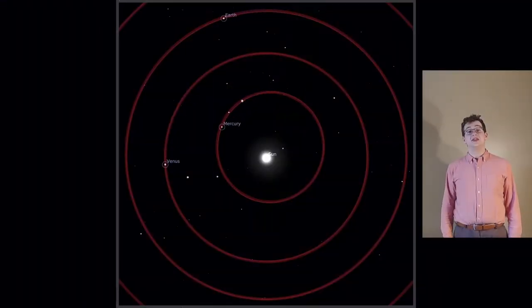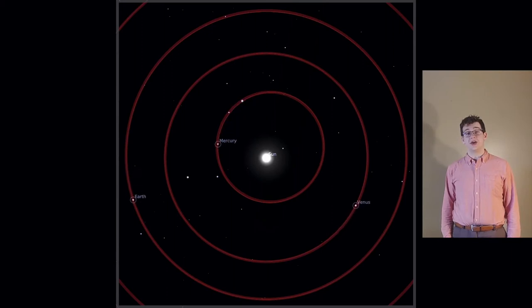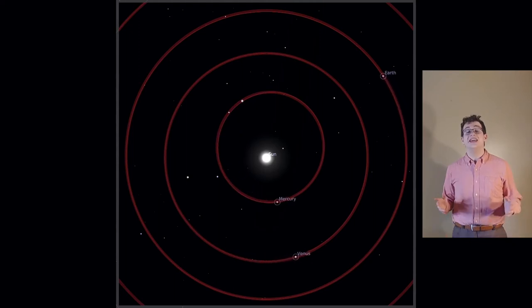Because Venus is closer to the Sun, it has a shorter year than the Earth. One year on Venus is about 225 Earth days long. However, it rotates very slowly, and unlike most other planets, rotates in a clockwise direction. One day on Venus is about 243 Earth days long, even longer than its year.